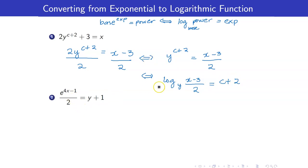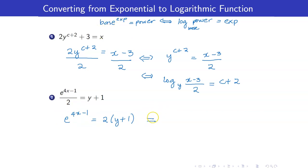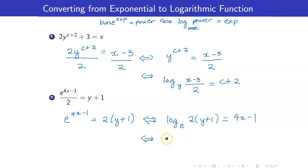For the next one, we employ the same method. Our base is e and exponent is 4x minus 1 — I will isolate this term. We have e raised to 4x minus 1 is equal to 2 times y plus 1, so we already have base raised to exponent equals power. We can now write this in logarithmic form: logarithm of the power, 2 times y plus 1, to the base e is equal to the exponent 4x minus 1. Since this is the logarithm to the base e, we write this as ln of (2y + 1) equals 4x minus 1.